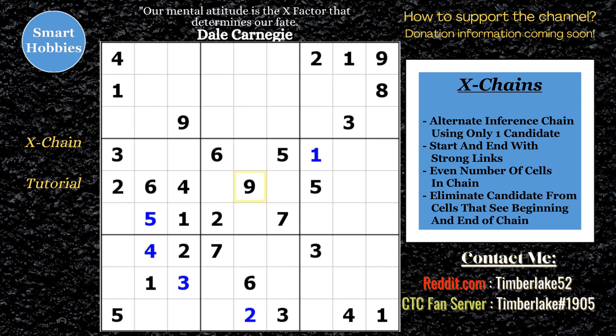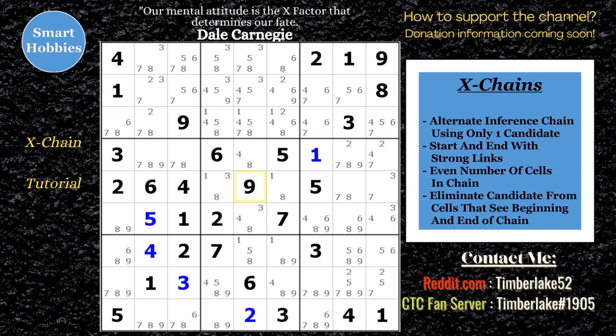I've explained alternate inference chains before. The idea is you have strong and weak links. I'll go through that again, but you can check my X-Y chain tutorial — I'll put a link at the end of this. This particular puzzle, 'Innies or Outies' by Joe Harris, had a spot where I was able to use a form of an X-Chain, and I'll go over that now.